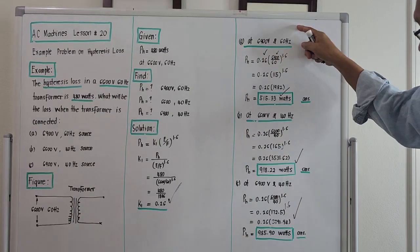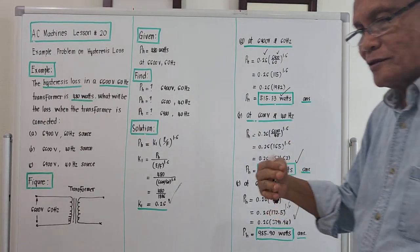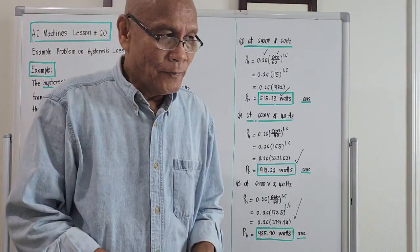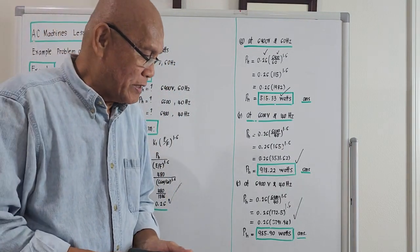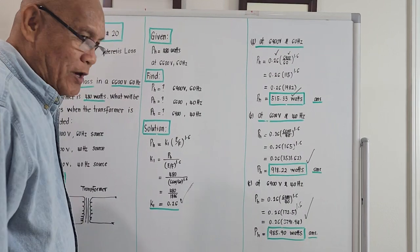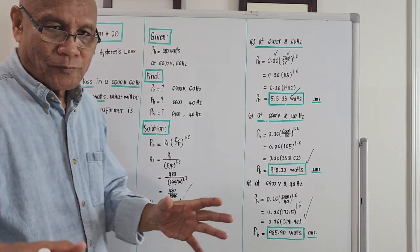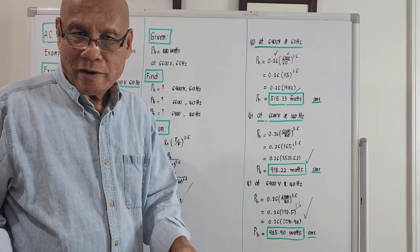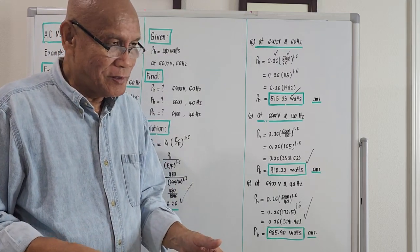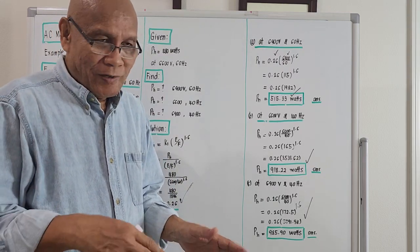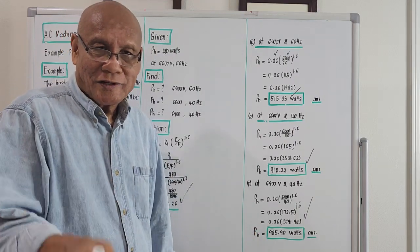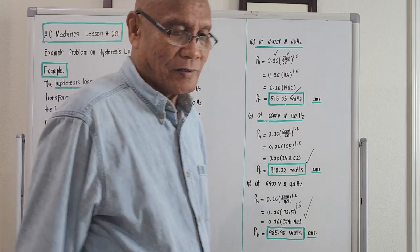So these are the values of the hysteresis loss at the different impressed voltages and frequencies. That's it — that's the way to compute hysteresis loss for a transformer. If we are given the impressed voltage and frequency, it's an easy one. Good morning from Los Angeles — Professor de los Reyes signing off.